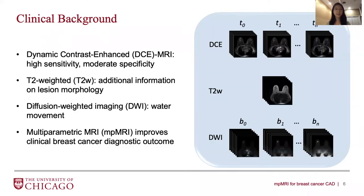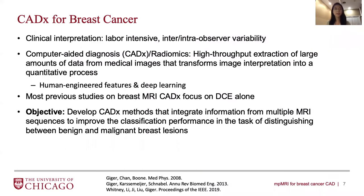In a breast MRI exam, DCE is the main sequence. It has very high sensitivity but moderate specificity, and studies have shown that multi-parametric MRI, which also includes T2-weighted and DWI sequences, can improve the clinical breast cancer diagnostic outcome. However, clinical interpretation of MRI exams is very labor-intensive and prone to observer variability, so computer-aided diagnosis methods continue to be developed. But most previous studies on breast MRI focus on using the DCE sequence alone. Our objective is to develop CADX methods that integrate information from multiple MRI sequences to improve classification performance in distinguishing between benign and malignant breast lesions.